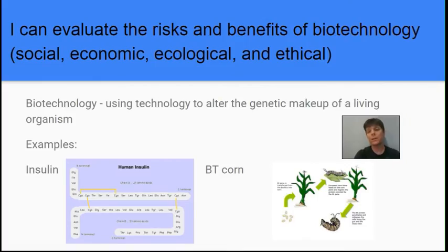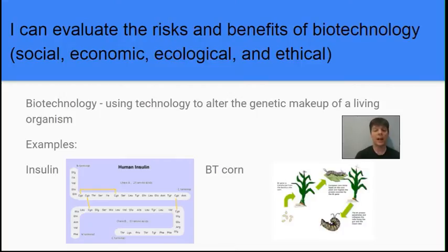Our next learning target is to evaluate the risks and benefits of biotechnology, which can involve social, economic, ecological, and ethical considerations. Biotechnology is using technology to alter the genetic makeup of a living organism. One example is genetically engineered insulin. Before this, people who are diabetic had to use insulin collected from cows or pigs during the slaughtering process. The biotech version inserted the gene for human insulin into a bacterium, tricking the bacteria into making the human protein. You can grow these bacteria, have them make a lot of insulin, then purify, bottle, and sell it.